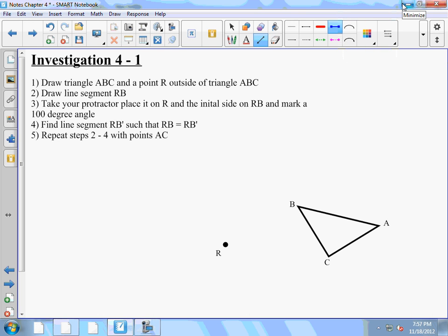All right, so today we do Investigation 4-1. We're going to rotate this triangle 100 degrees. First step, you're going to want to draw a point and a triangle. On the center of your sheet of paper, draw triangle ABC and some point not too far away, point R.